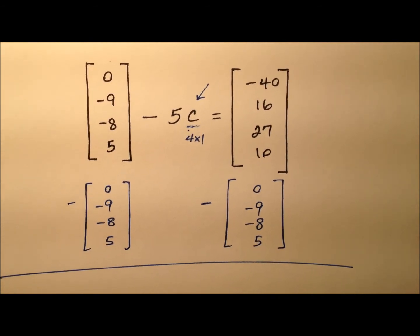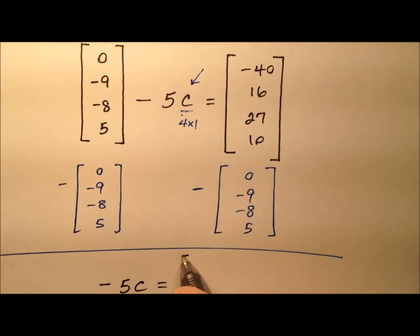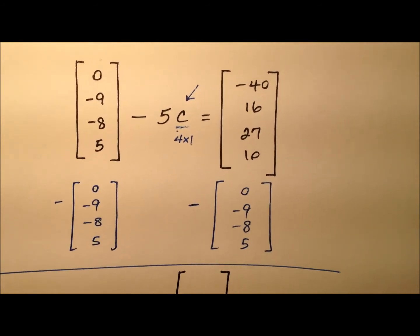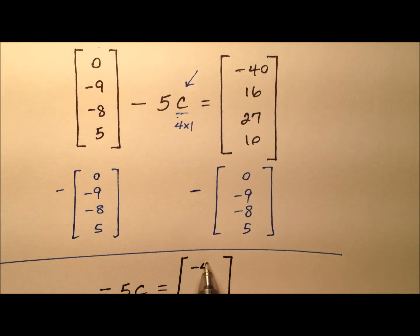When I do that, I'm going to have negative 5C equals, and I'll have this column matrix, and the entries will be negative 40 minus 0, so negative 40.